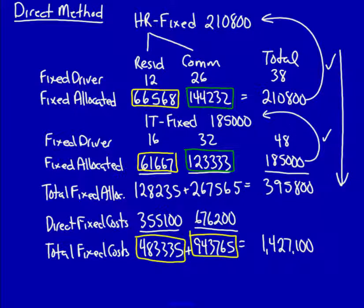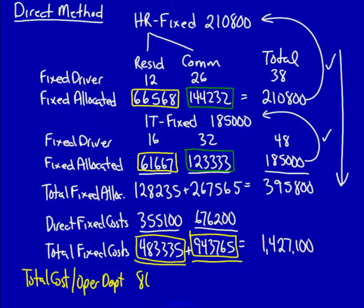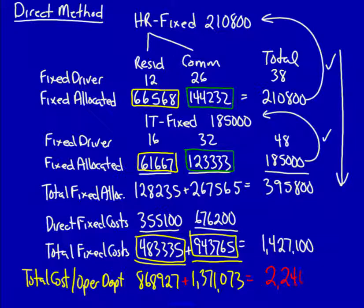In that case we get the total costs per operating department. For residential we get 868,927. For commercial we get 1,371,073. If we now add those amounts together we get two million two hundred and forty thousand.